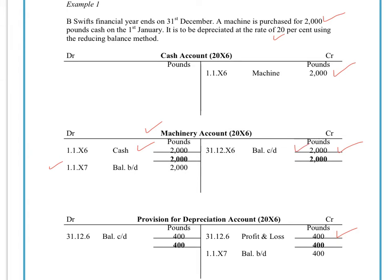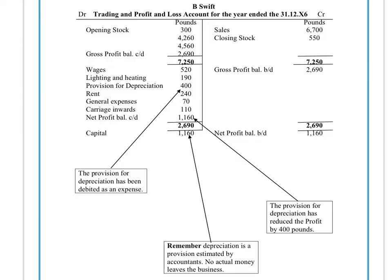We would credit the provision for depreciation account and debit the profit and loss account, and the balance at the end of the year will be £400, brought down into the first day of January next year also as £400. The entry onto the debit side of the profit and loss account — now called an income statement — would be the £400, which is taken away with all the other expenses like wages and lighting and heating, and of course it's going to reduce your net profit by £400.